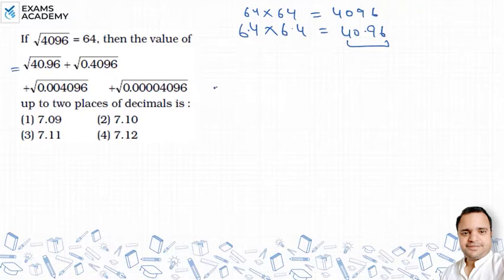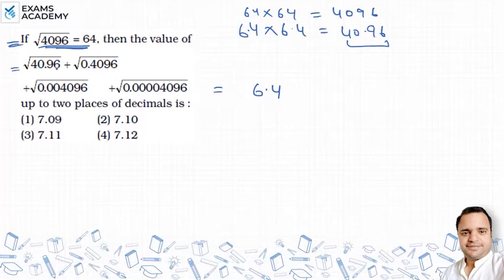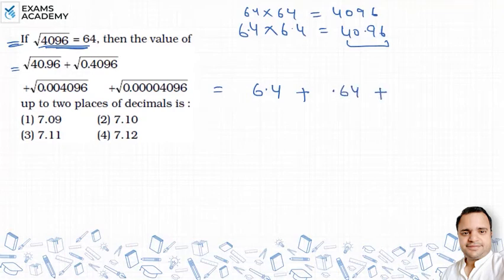So in place of √40.96, we can write 6.4 — this information is taken from the given assumption. Using the same concept, for 0.4096 which has 4 digits after the decimal, the value after removing the square root will be 0.64, i.e., 2 digits after decimal. And for 0.004096, which has 6 digits after the decimal, the value will be 0.064.